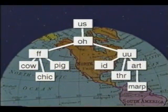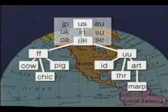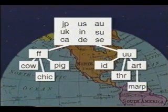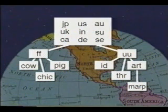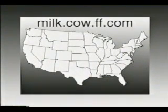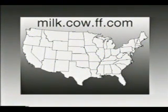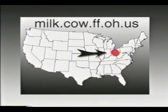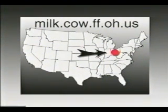Because the Internet is global, countries had to fit somewhere into the structure of the address. Basing the system predominantly on country codes used for making international phone calls, the domain name in most cases is the geographical domain for the organizational domain name. Milk.cow.ff.com could have a geographical base name of milk.cow.ff.oh.us — OH is Ohio.